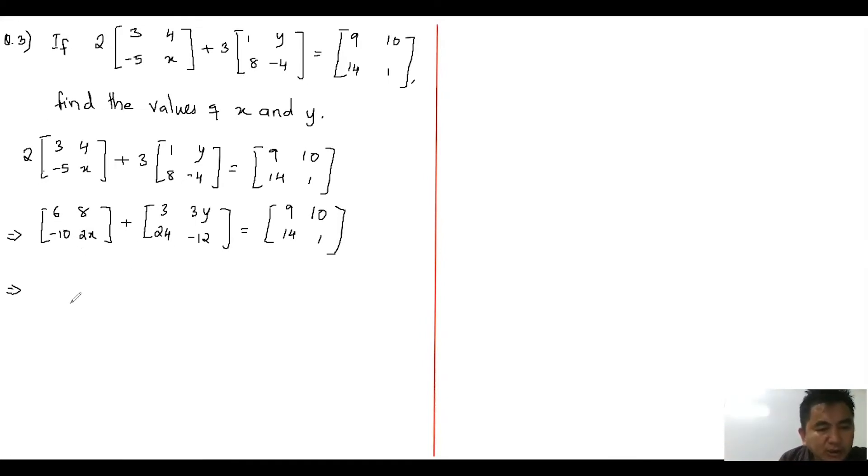Here, since the orders are same, we can add these two matrices. We have here six plus three equals nine, and eight plus three y. Similarly, twenty-four minus ten comes to fourteen. Then we have 2x minus twelve.